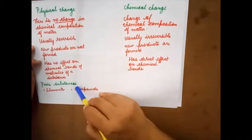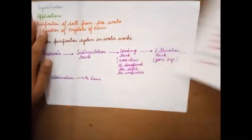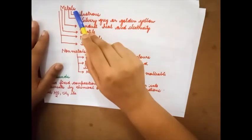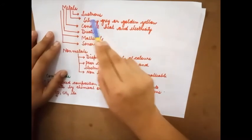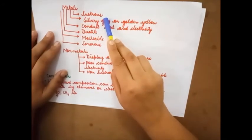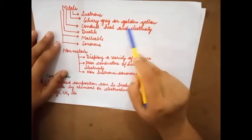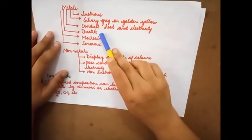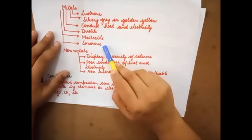Next moving on to pure substances. Under that we have elements and compounds. Under elements we have metals, non-metals and metalloids. Metals are lustrous in nature. They are either silvery grey or golden yellow. They conduct heat and electricity. They are ductile as well as malleable. And they are sonorous, that means they produce sound.